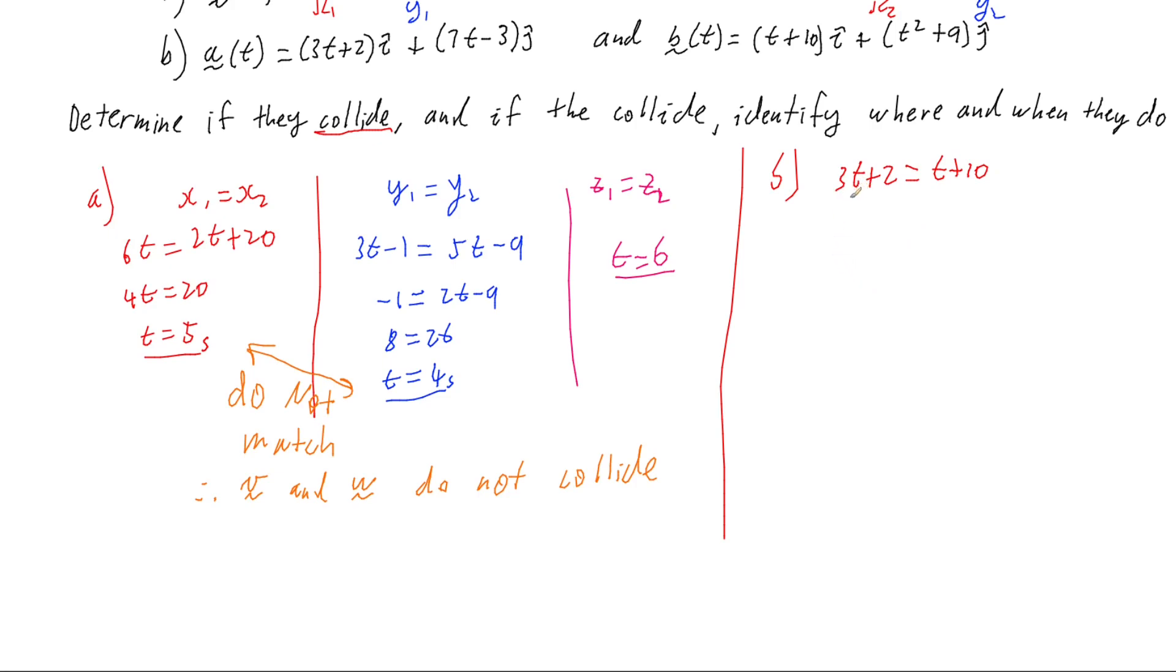And so now I've got, if I minus t from both sides, I'm going to get 2t, and subtract 2 from both sides, I'm going to get 2t equals 8, divide both sides by 2, I get t equals 4.